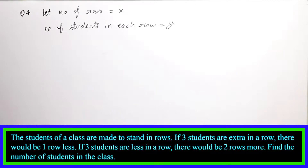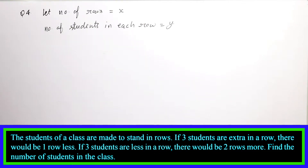Question number 4. The students of a class are made to stand in rows. If 3 students are extra in a row, there would be 1 row less. If 3 students are less in a row, there would be 2 rows more. Find the number of students in the class.